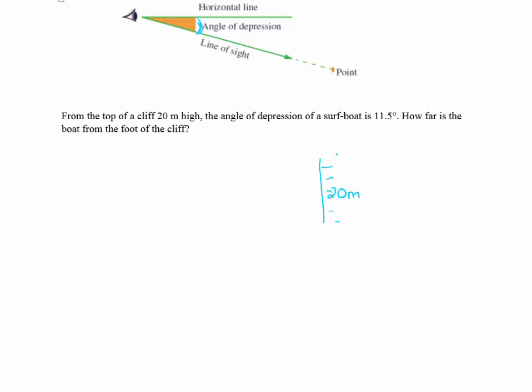So there's my cliff and I now have an angle of depression of a surf boat. So I'm standing on the top of the cliff and out here in the ocean is a surf boat. Let's just put a dot here to tell us where it is.